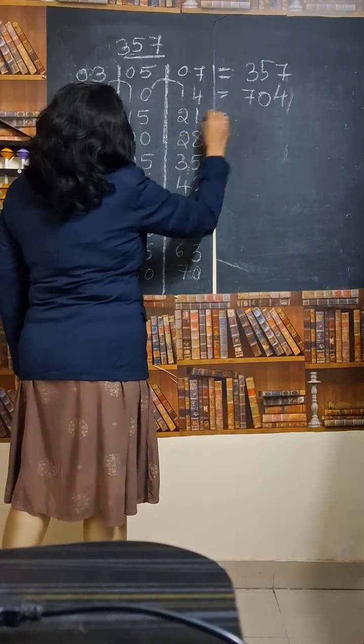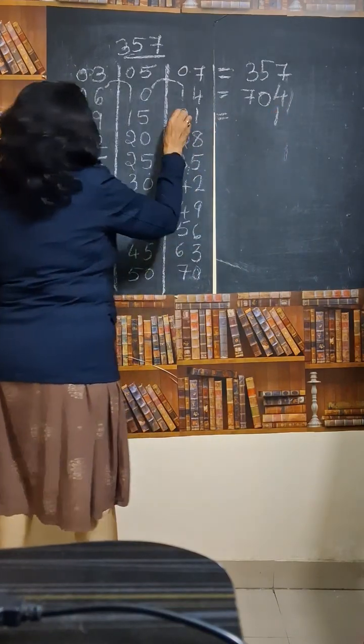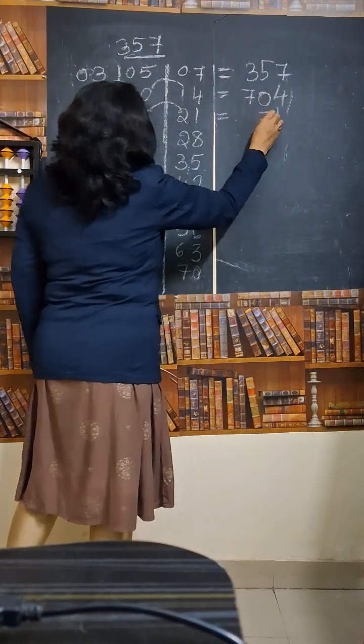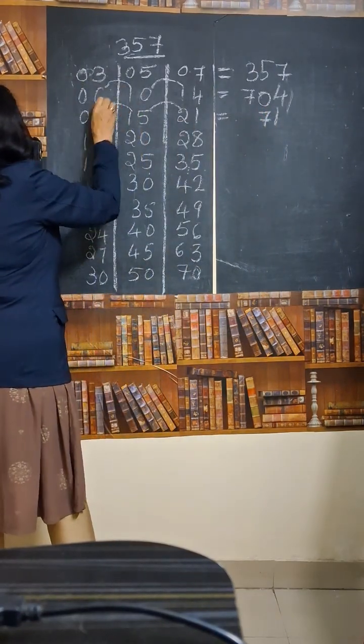Next one, write this 1 as it is. 10s place added to the units place: 5 plus 2 is 7. Write the next number.